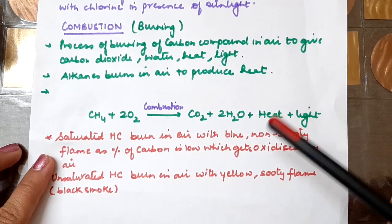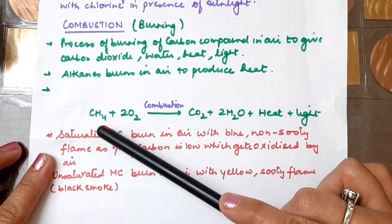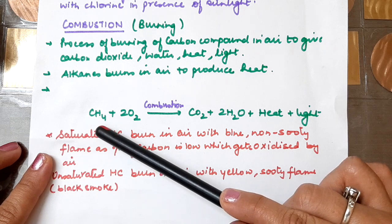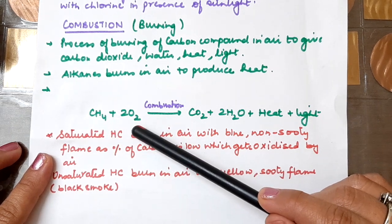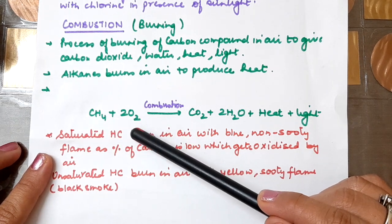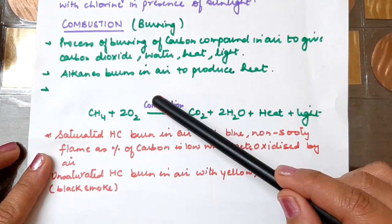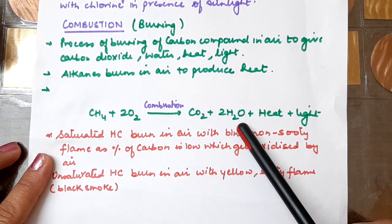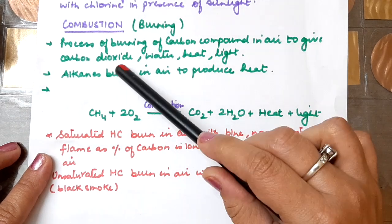Let's understand combustion with an example. Methane is a saturated hydrocarbon. When it burns with oxygen in the air, combustion occurs. The products are carbon dioxide, water, heat, and light.